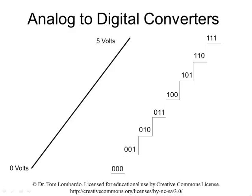Hi, and welcome to our lesson on analog-to-digital converters. Microcontrollers often need to measure real-world quantities. For example, our digital thermostat has to measure temperature. For that, it uses a temperature sensor. The sensor sends out a voltage that's proportional to the temperature. That's an analog voltage.